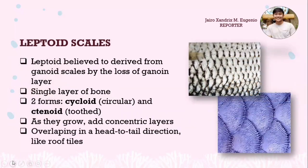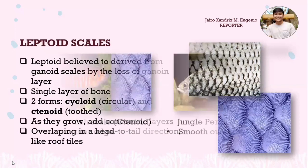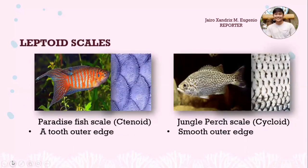The second type is leptoid scales. Leptoid scales are believed to be derived from the ganoid scales by the loss of the ganoid layer. Leptoid scales have two forms: the cycloid and the ctenoid scales. As they grow, they add concentric layers, overlapping in a head-to-tail direction like roof tiles. Examples include the paradise fish with ctenoid scales and the jungle perch with cycloid scales.